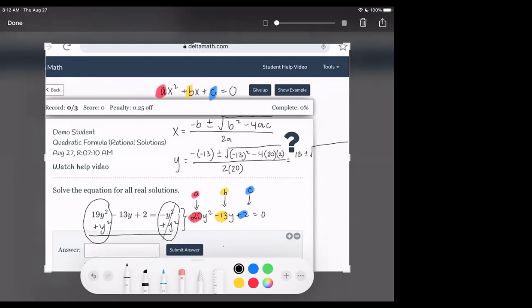13 squared is 169, minus 4 times 20 times 2, that's 160, all over 2 times 20, that's 40. So we're just simplifying now.